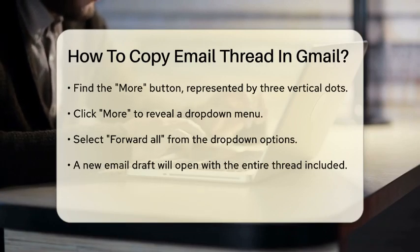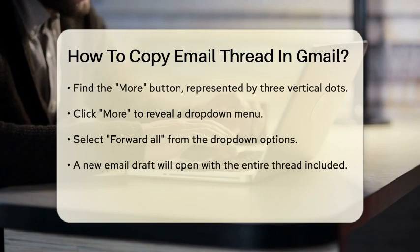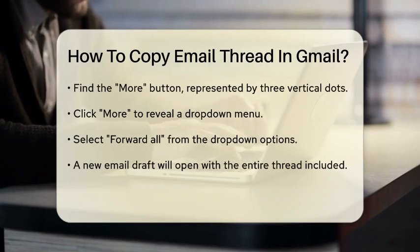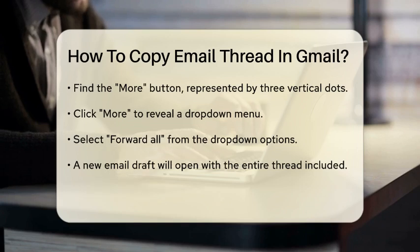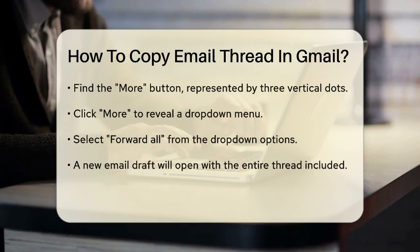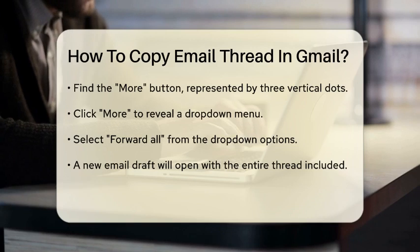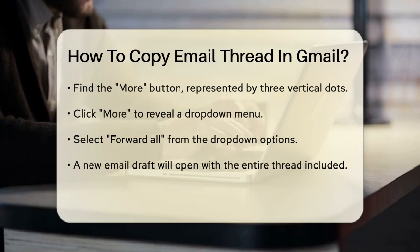Next, click on the More button, which is usually represented by three vertical dots at the top right of the email thread. When you click More, a drop-down menu will appear. From this menu, select Forward All. This option will open a new email draft with the entire conversation thread included.